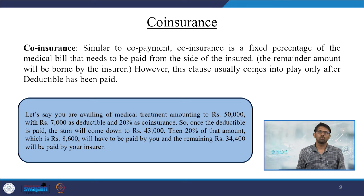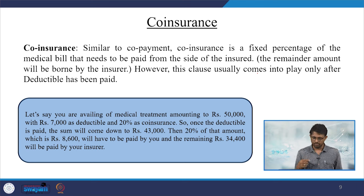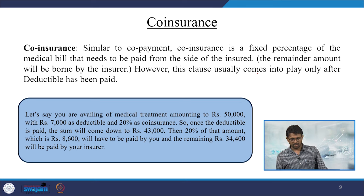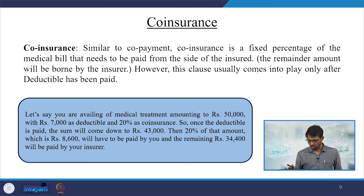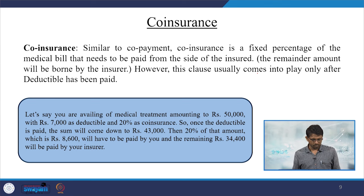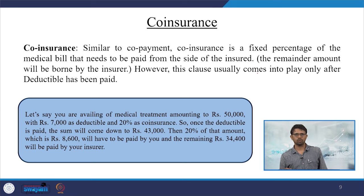Co-insurance is similar to co-payment — it is a fixed percentage of the medical bill that needs to be paid by the insured; the remainder is borne by the insurer. However, this clause usually comes into play only after the deductible has been paid. For example, availing medical treatment of 50,000 rupees with 7,000 rupees deductible and 20 percent co-insurance.